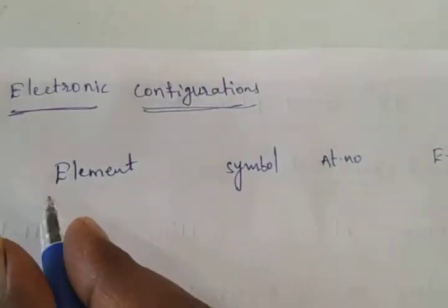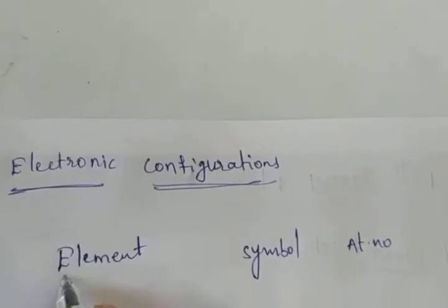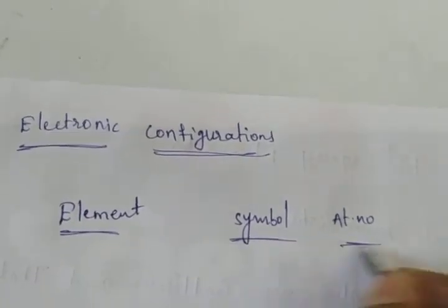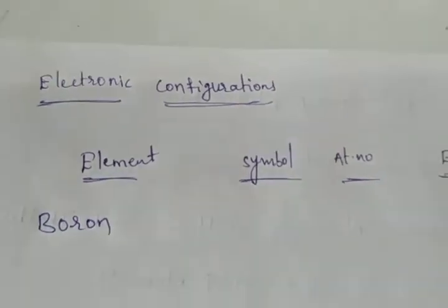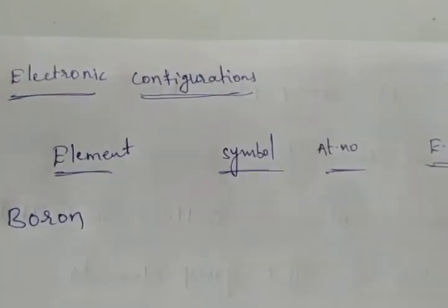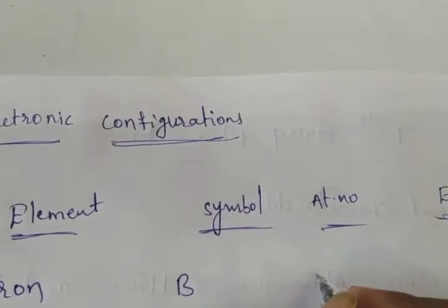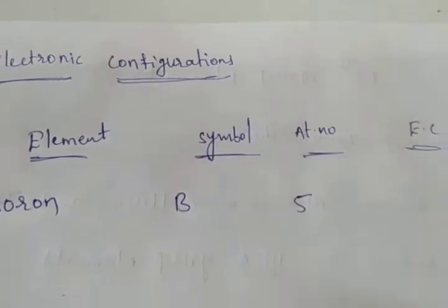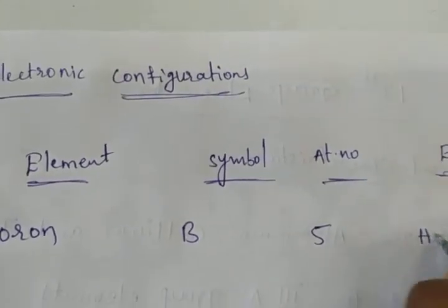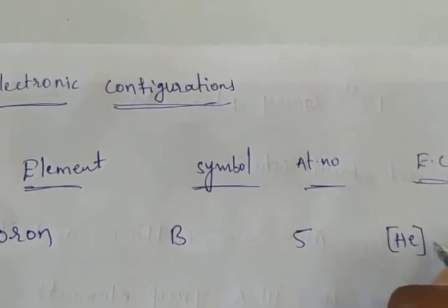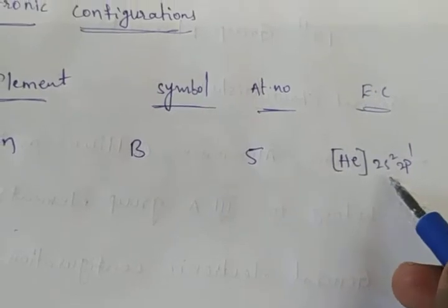The first element in the 13th group is boron. The symbol of boron is B. The atomic number is 5. The electronic configuration is [He] 2s² 2p¹.